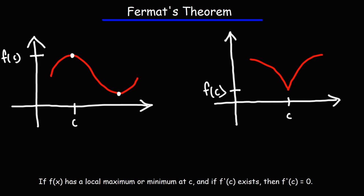Let's talk about Fermat's Theorem. Fermat's Theorem states that if f(x) has a local maximum or minimum at c, and if f'(c) exists, then f'(c) is equal to zero.